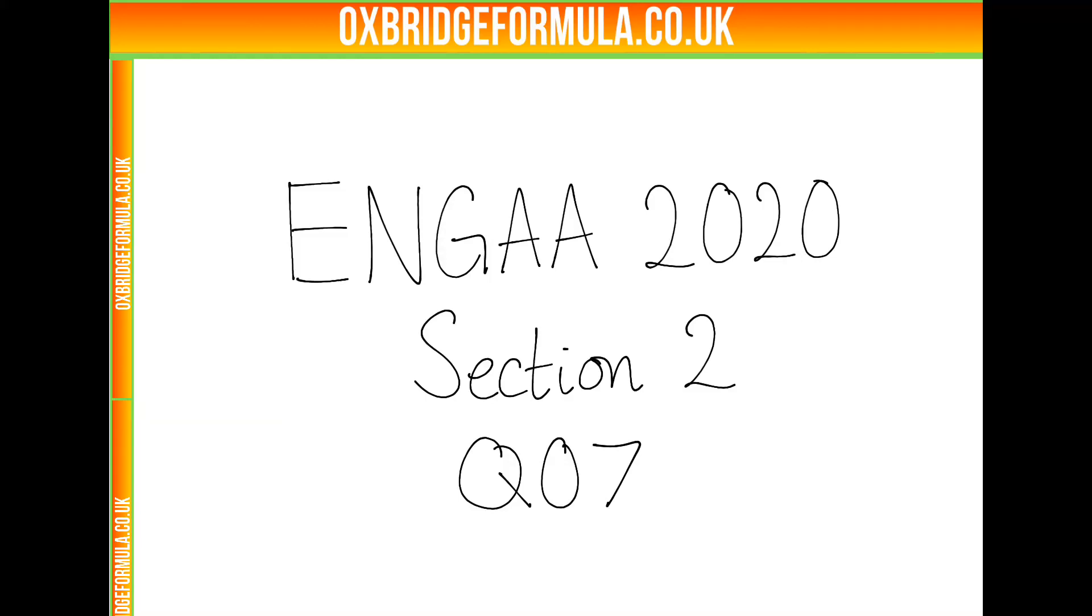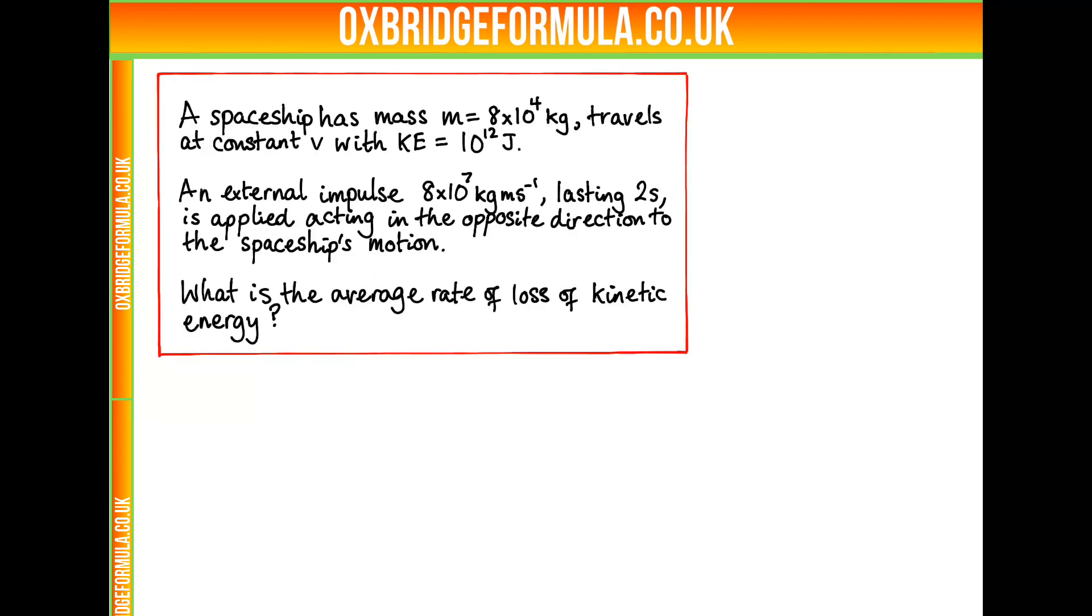This question is taken from the Enger 2020 section 2 paper and it is question 7. The question reads: a spaceship has mass m equals 8 times 10 to the 4 kilograms. It travels at constant velocity with kinetic energy 10 to the 12 joules. An external impulse of 8 times 10 to the 7 kilogram meters per second lasting two seconds is applied acting in the opposite direction to the spaceship's motion. What is the average rate of loss of kinetic energy?